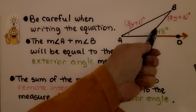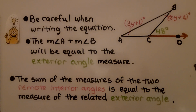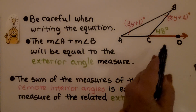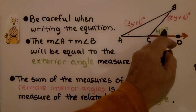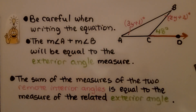Be careful when writing the equation. The measure of angle A plus the measure of angle B will be equal to the exterior angle measure — not 180 degrees or anything like that. It's equal to the exterior angle measure. The sum of the measures of the two remote interior angles is equal to the measure of the related exterior angle.